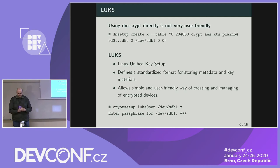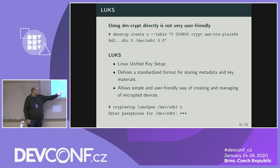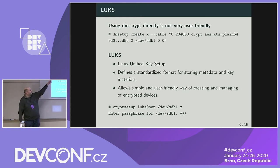To make things easier we have LUKS — Linux Unified Key Setup — a standard that defines a format for storing metadata and key material on the encrypted device, allowing a user-friendly way to work with encrypted devices. The tool cryptsetup works with LUKS and dm-crypt. If you have an encrypted device, you just run 'cryptsetup luks open', give the device name and a name for the new device, cryptsetup asks for the passphrase, and everything works. The key is stored on the device in metadata, protected by the password — cryptsetup reads the metadata, decrypts the key, and creates the device mapper device.